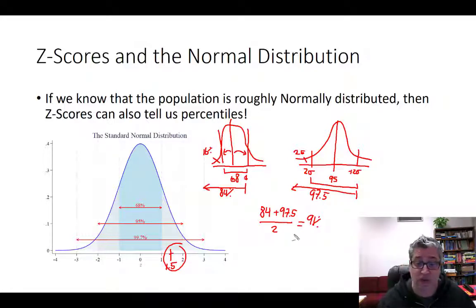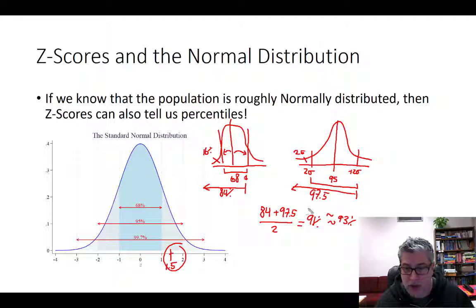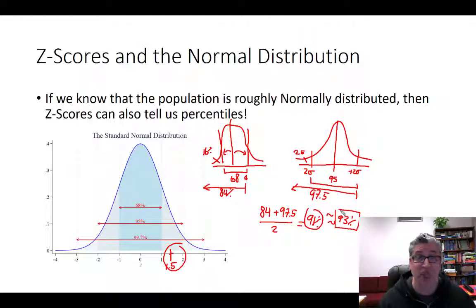Basically, only 9% of folks did better than you according to our little ballpark estimate. And if we actually consult a statistical table, the percentile for a z of 1.5 is actually 93%. So, our estimate of the truth, you know, our estimate was pretty good.